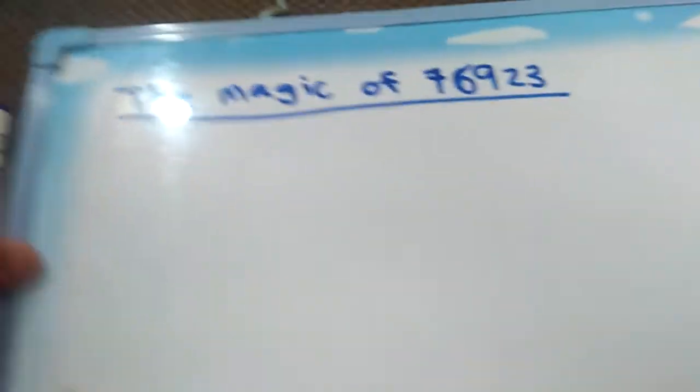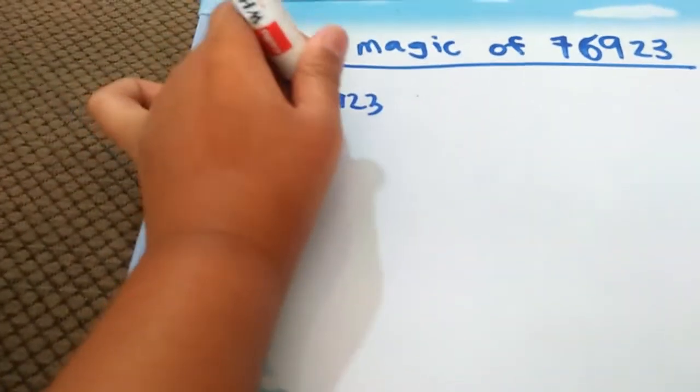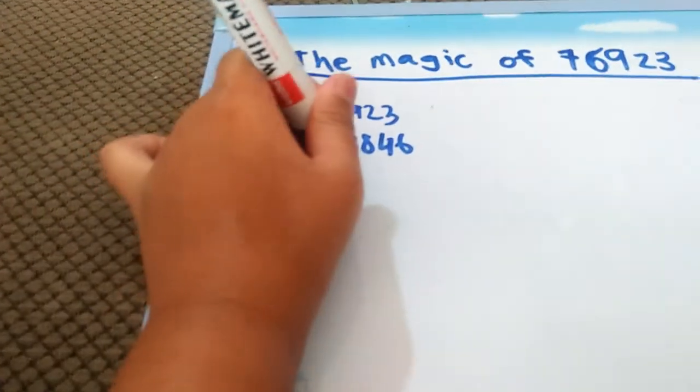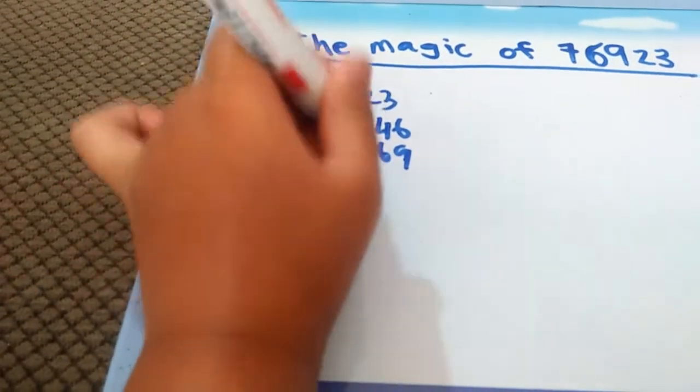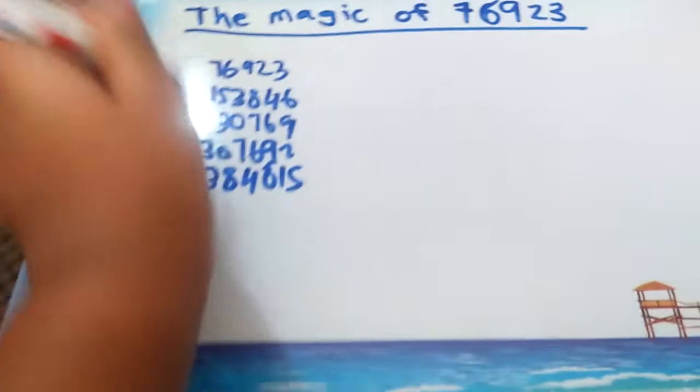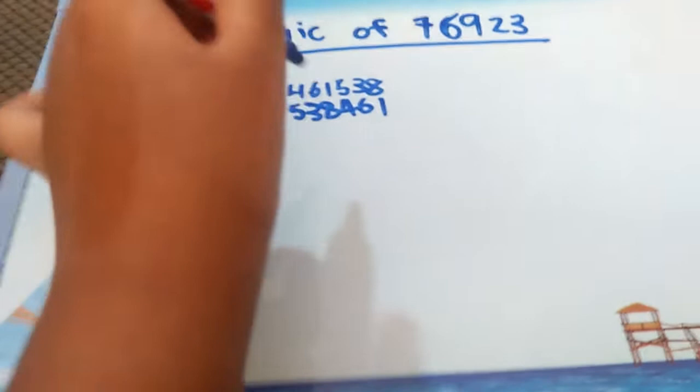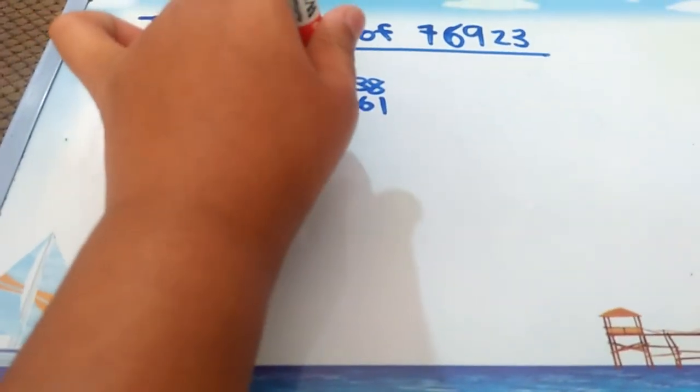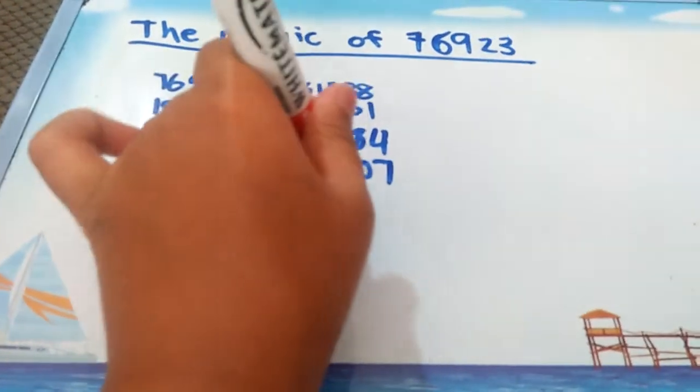Well, it is very interesting. I'll write all the multiples here: 76,923, 461,538, 307,692, 384,615, 538,461, 615,384, 692,307, 769,230.